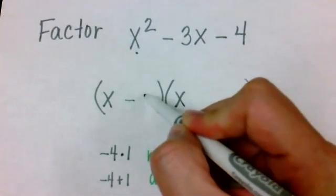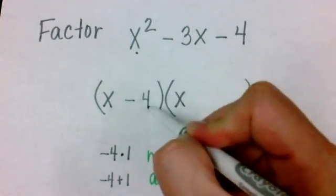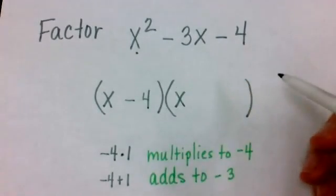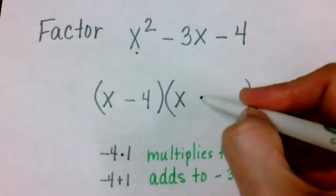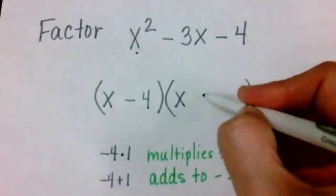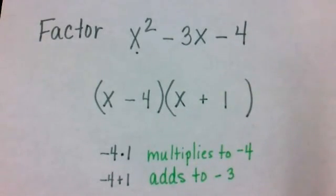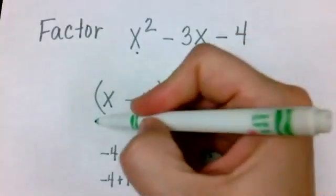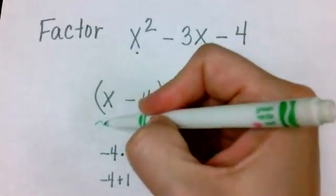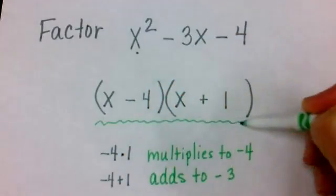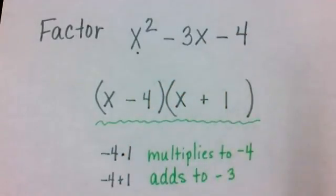My negative 4 will write as minus 4, and my positive 1 will write as plus 1. I'll leave this as my final answer. Since the problem asked me to factor, I answer with two parentheses. Thank you.